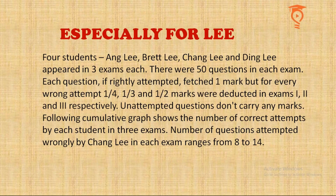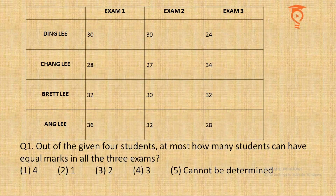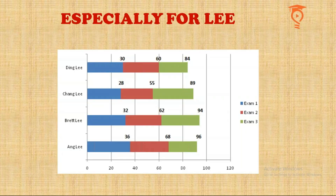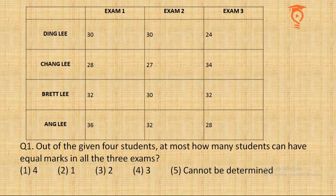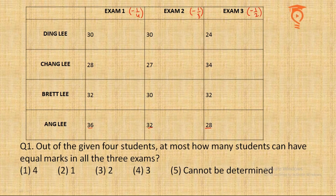In these two slides all the data was given for the questions. There are only three questions, so to avoid dealing with the cumulative bar graph repeatedly, I've created a table showing the number of questions attempted by A, B, C, and D — that is Angley, Bretley, Changley, and Dingley — in the three exams. We also know that in Exam 1 each wrong answer carries negative 1/4, in Exam 2 it's negative 1/3, and in Exam 3 it's negative 1/2.